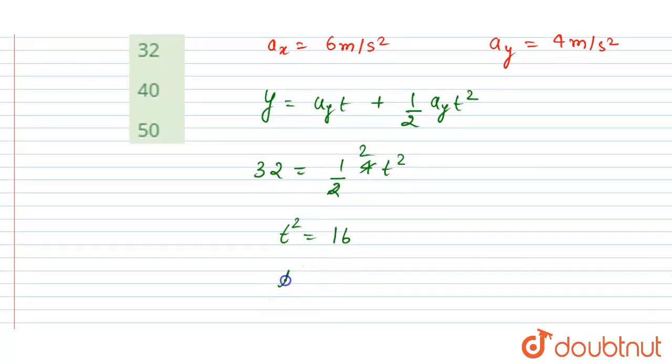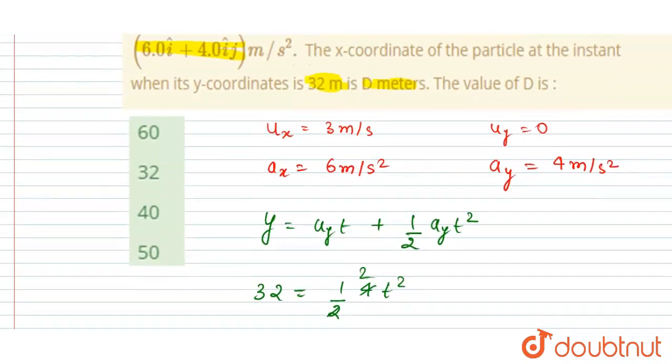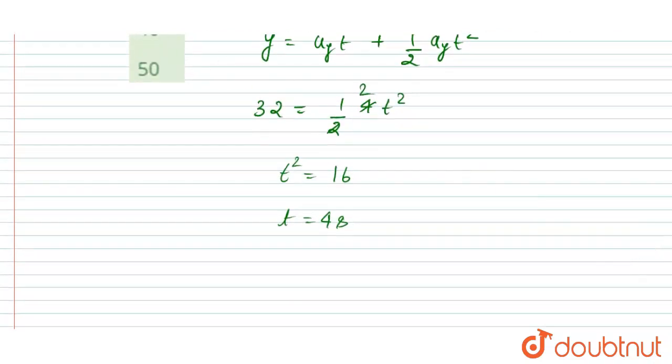Simple. So we have to find out the x-coordinate at t equals 4 seconds. So we can apply the same second equation in x direction. So we will write here x equals ux·t plus half ax·t².